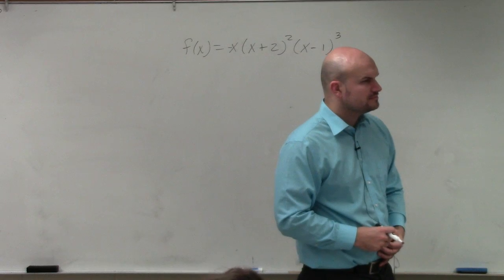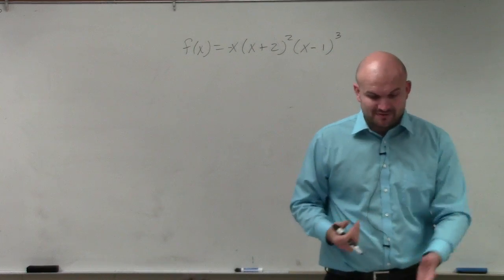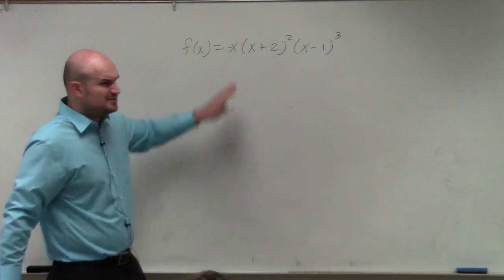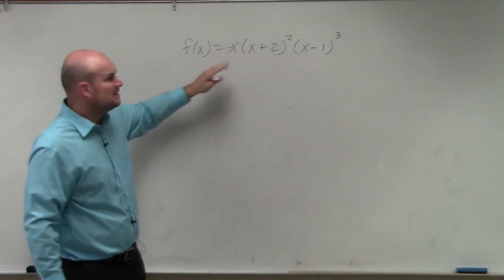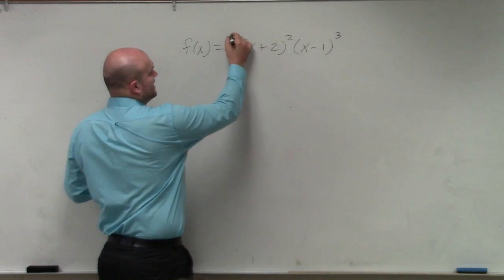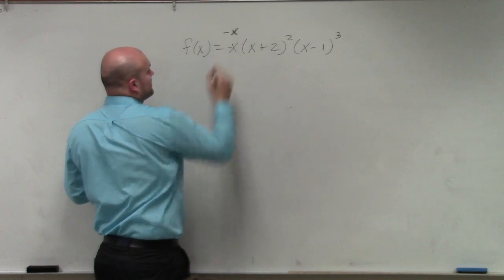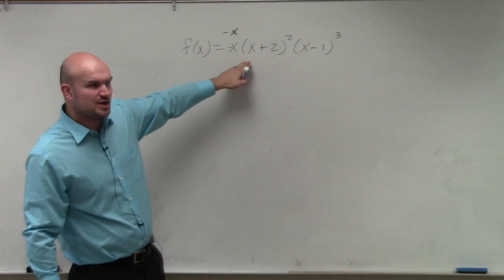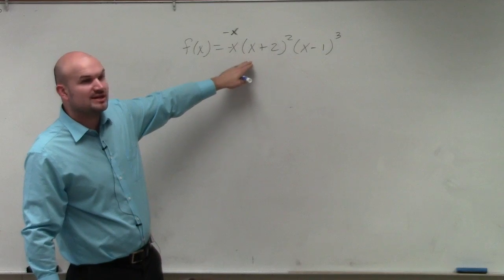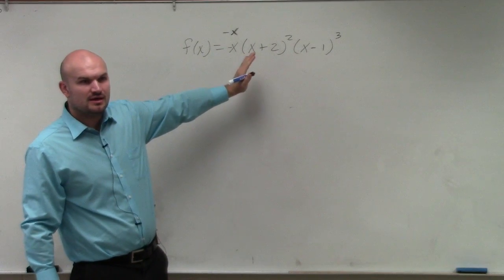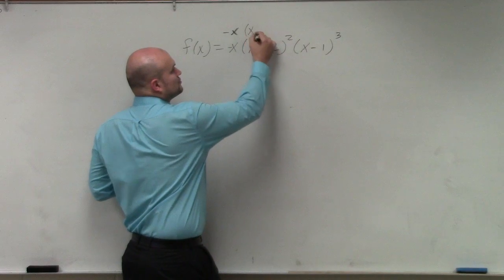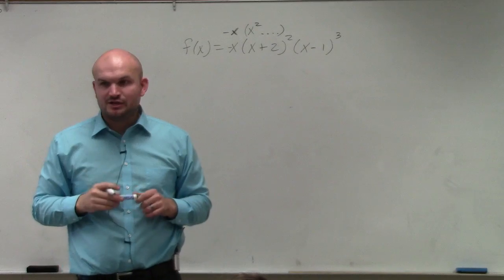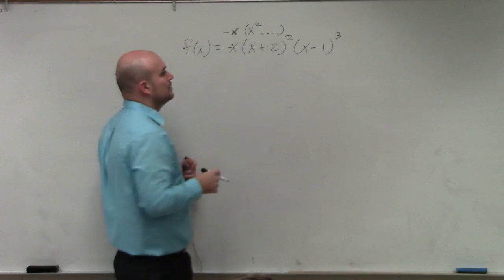So to state the degree, what we have to do is we'd have to say this needs to be multiplied out, right? This would actually have to be multiplied out. So we say, all right, well, this is negative x. If I was going to expand x plus 2 squared, that'd be x plus 2 times x plus 2. So the expanded form of that would give me a degree of x squared. And the expanded form of x minus 1 cubed would give me a degree of x cubed.